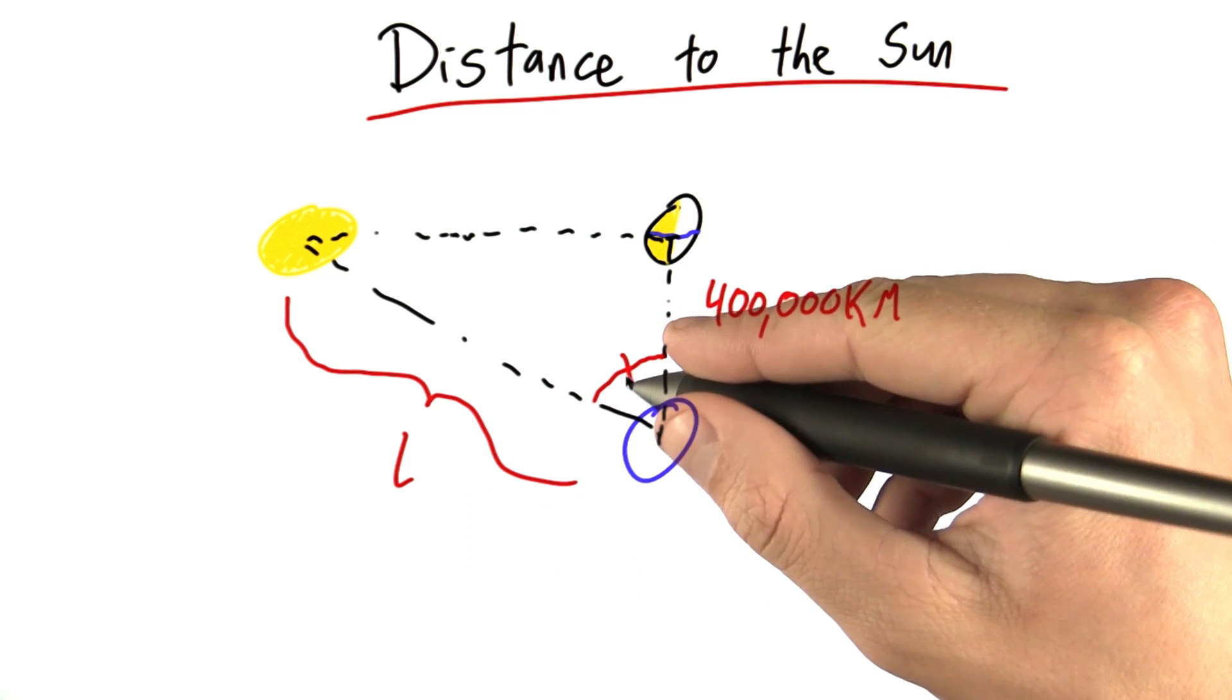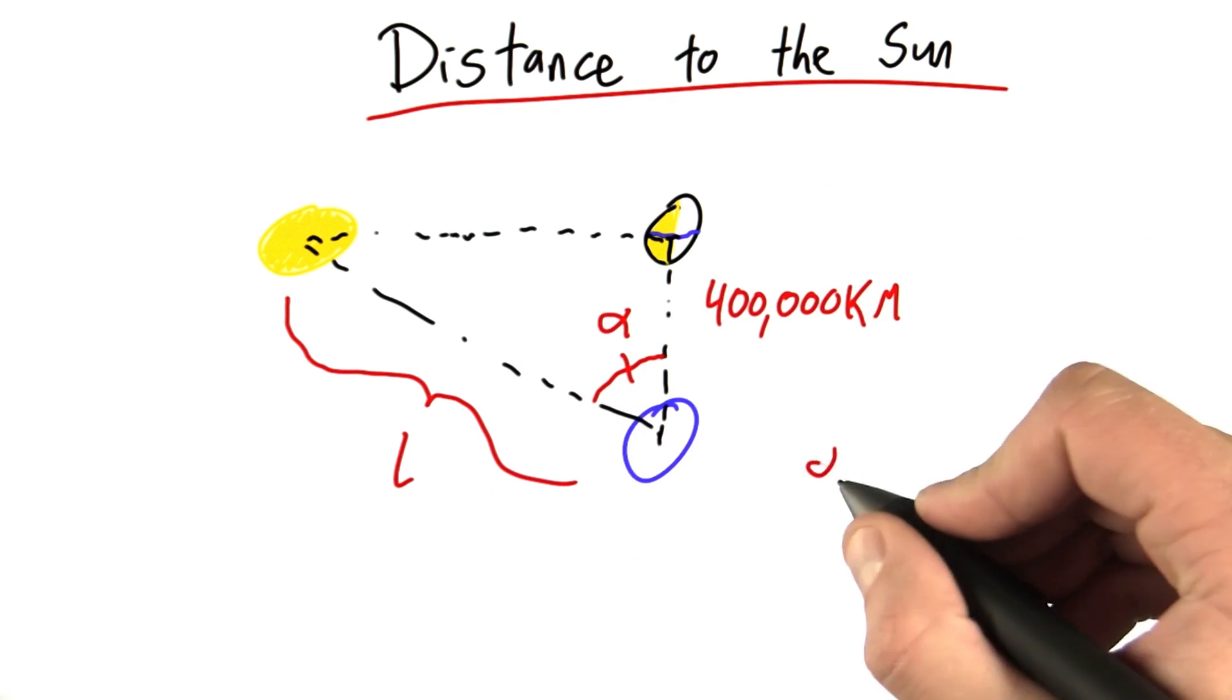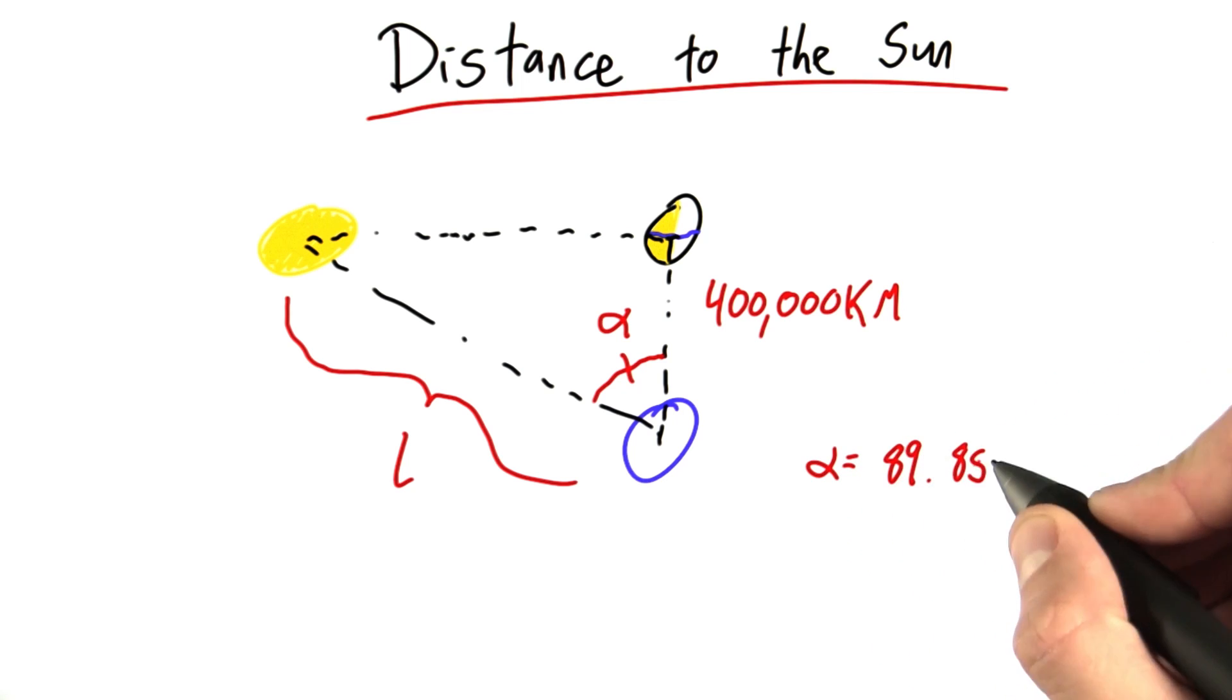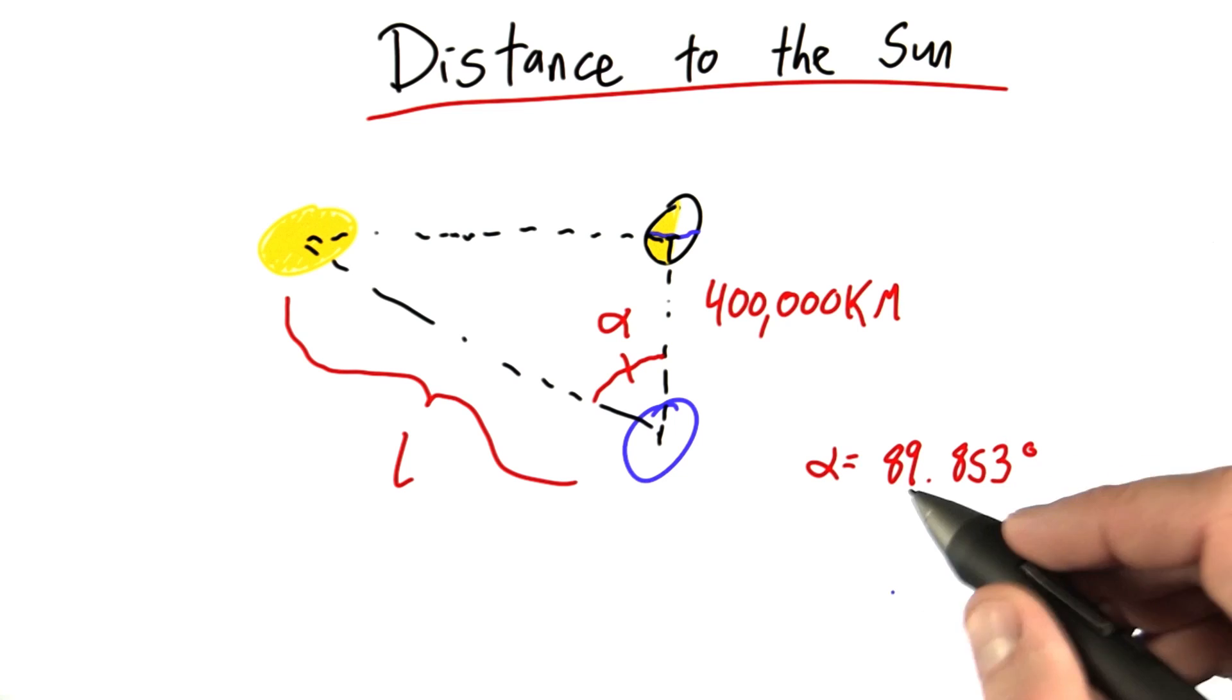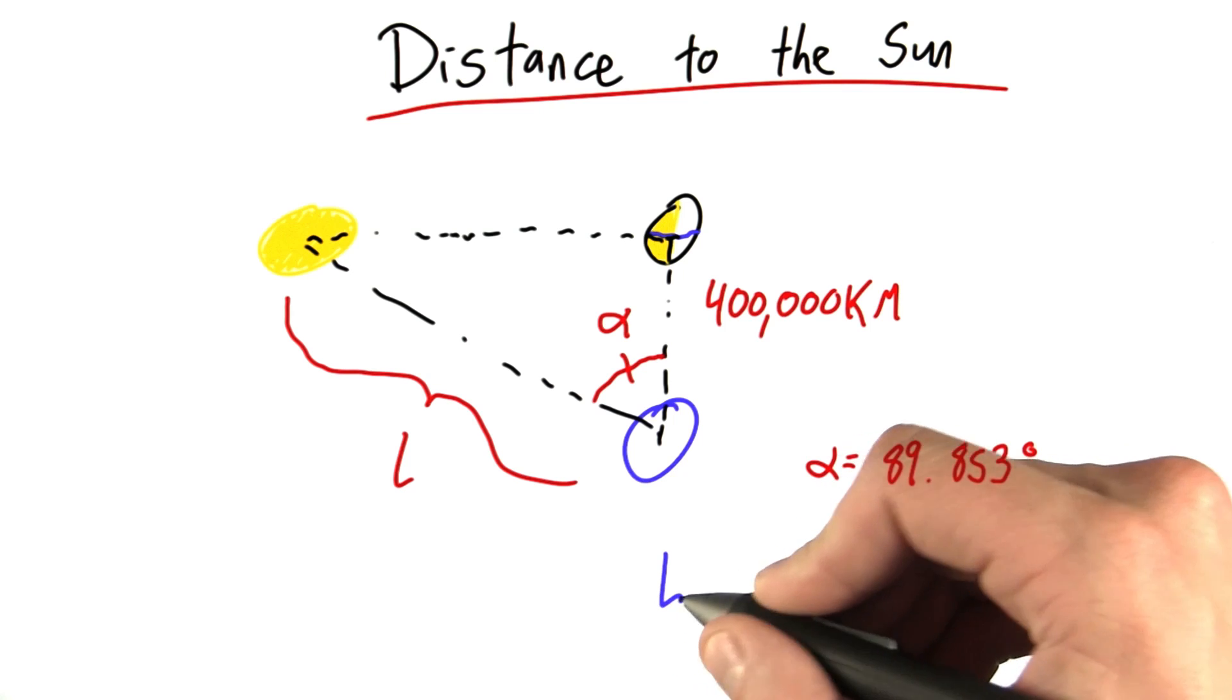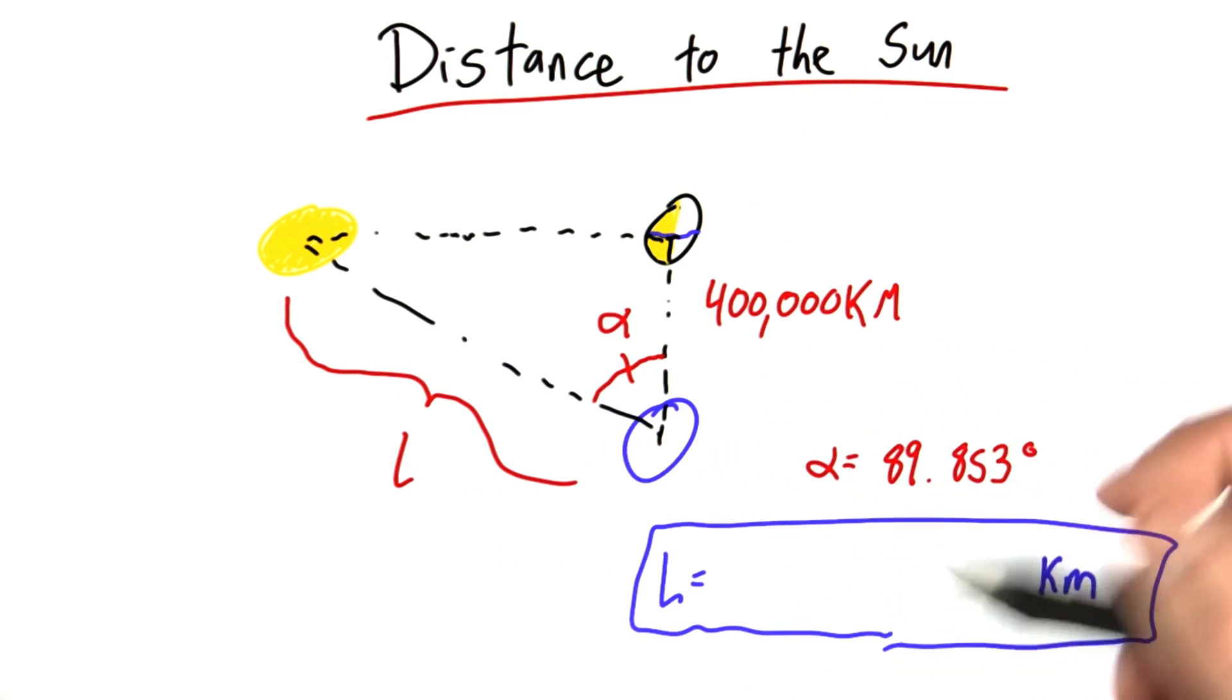This actually turns out to be a really large angle. So this angle, which I'll call alpha, alpha is actually equal to 89.853 degrees. So, given this number and this distance between the Earth and the Moon, can you tell me what this L is, the distance between the Sun and the Earth? Give your answer in kilometers.